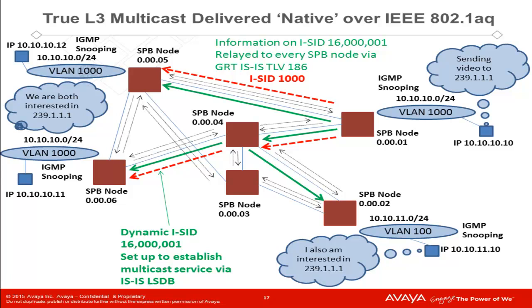Note that there is also another subnet and a station at IP address 10.10.11.10 that also issues an IGMP join for multicast group 239.1.1.1. Even though the station is on a different subnet, the same ICID is used to extend multicast services across the L3 boundary with the Layer 2 services distribution tree. The result is the ability to traverse L3 routed boundaries without the use of traditional multicast routed interfaces. Note here that we are using TLV 186 for unconstrained multicast services. The end result is a very stateful and deterministic delivery model for IP multicast services that delivers both scale and performance. Also, due to the fact that the multicast distribution tree is an ICID, the failure convergence times for IP multicast delivered over an SPB network is extremely fast — on the order of 100 milliseconds or less. This convergence time is more than fast enough to be totally transparent to any application or service being delivered.